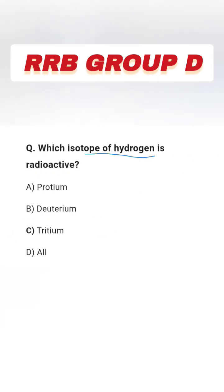Next question: Which isotope of hydrogen is radioactive? Options are protium, deuterium, tritium, and all. The right answer is option C, tritium.